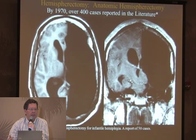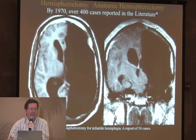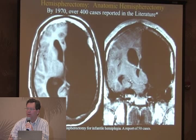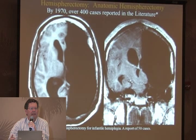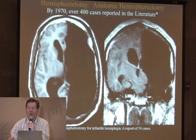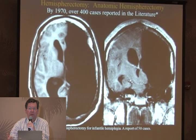The issue that emerged in the late 1970s and early 1980s was a condition called superficial hemosiderosis - chronic blood in membranes. About one-third of cases developed this, and of those cases, one-third died from the superficial hemosiderosis.